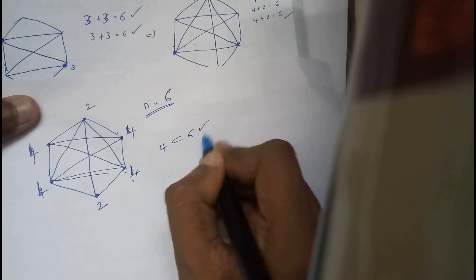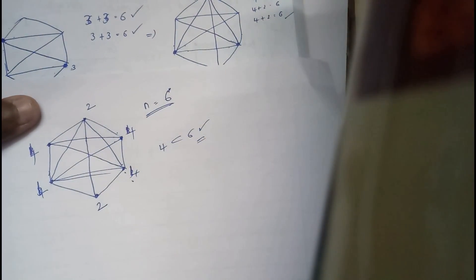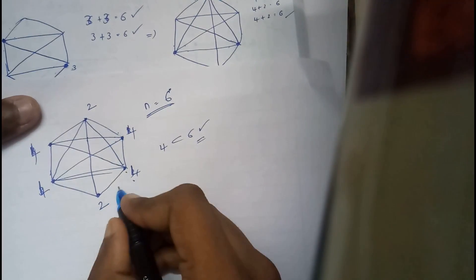Two plus two, four. Four is less than six. That's true. So we should add it. This is what the Hamilton closure of this graph.